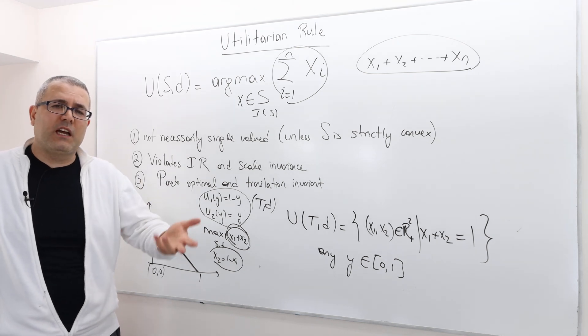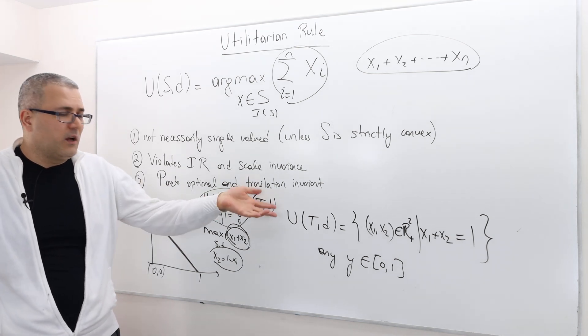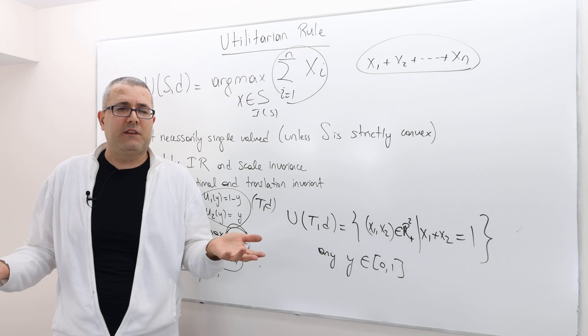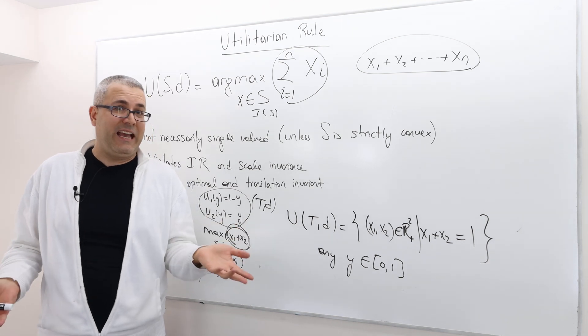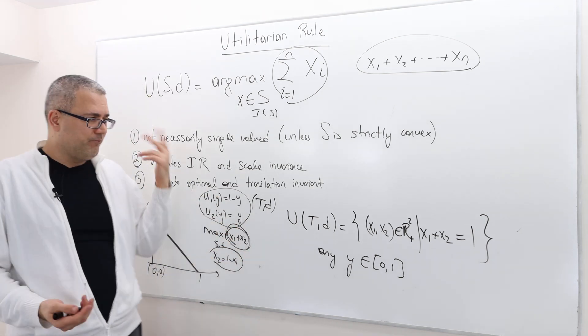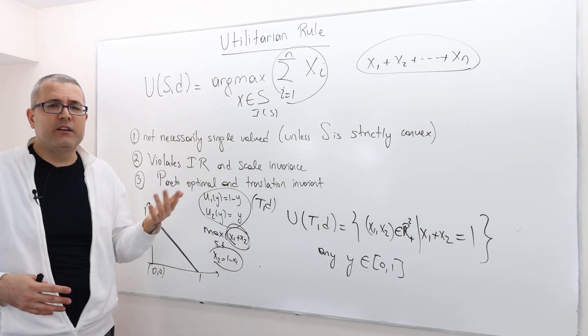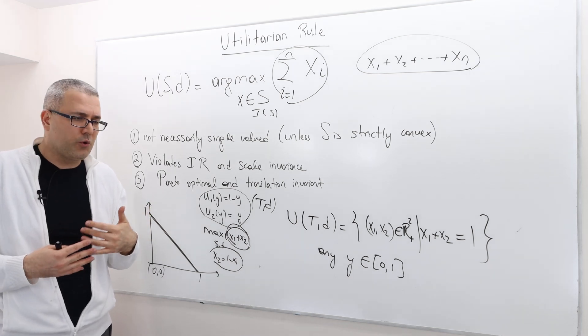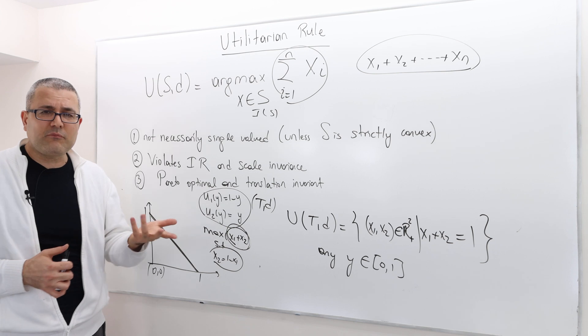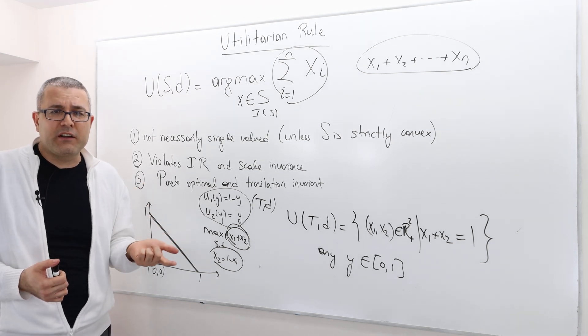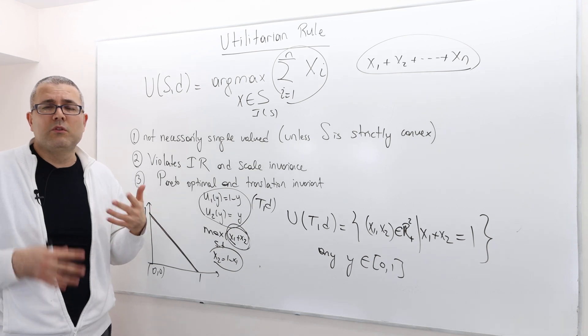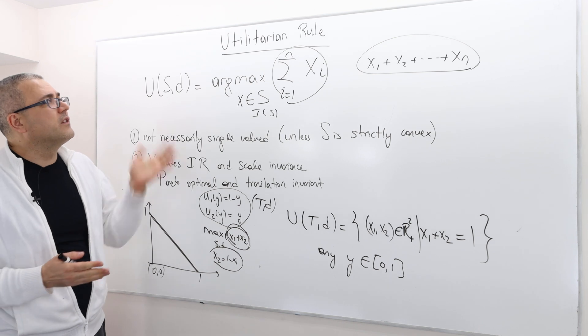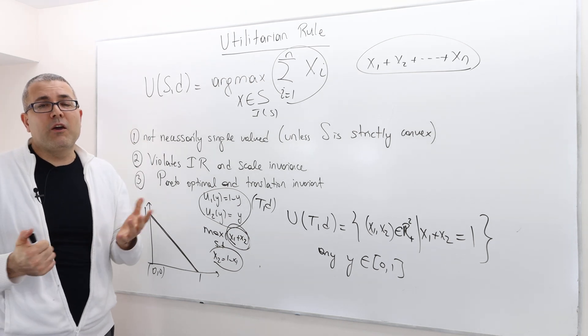When the solution is not unique, obviously it's a problem because the rule doesn't really tell us anything. It basically says any way of distributing the surplus is fine. But can I be more specific? Then maybe using utilitarian rule in this instance is not the appropriate choice. We should be using some other rule—Nash, egalitarian rule, or Kalai-Smorodinsky rule. All of them were giving us a unique solution, remember. So this is what the utilitarian rule is. I hope that was clear.